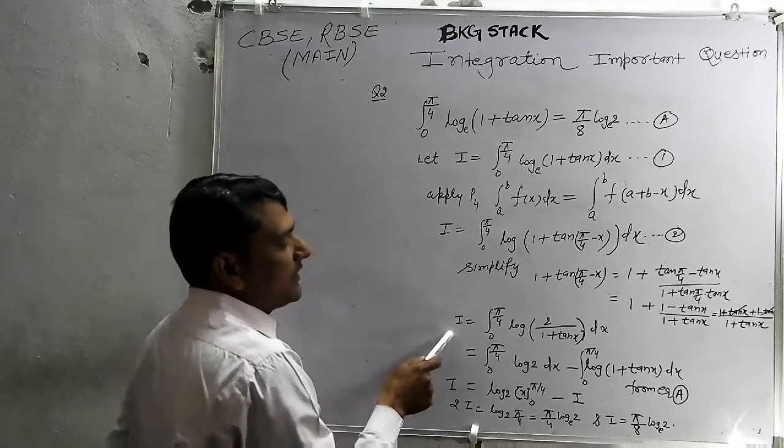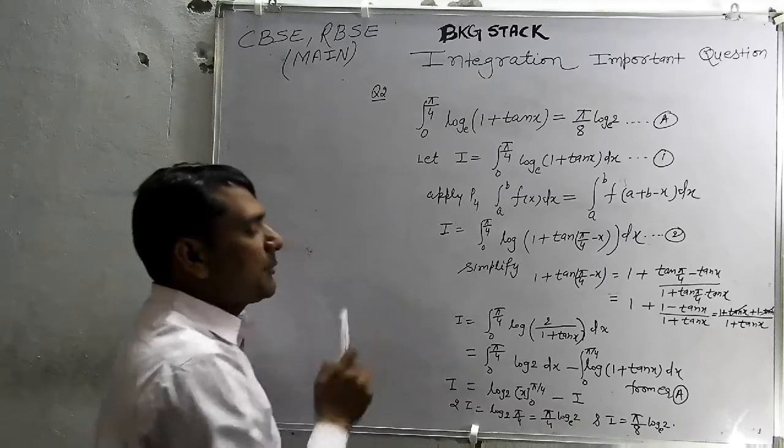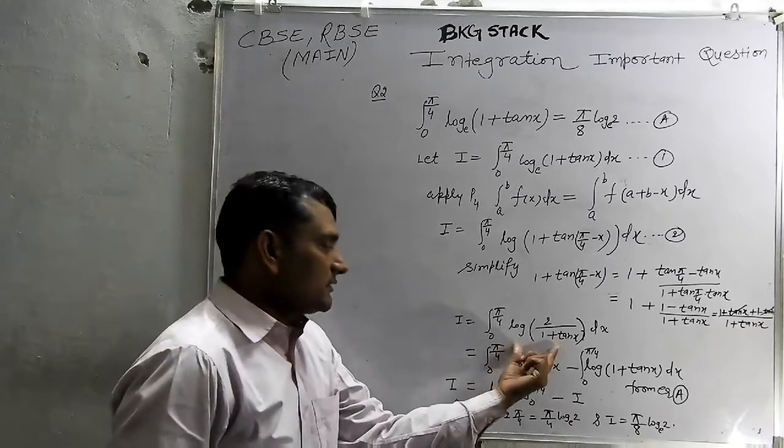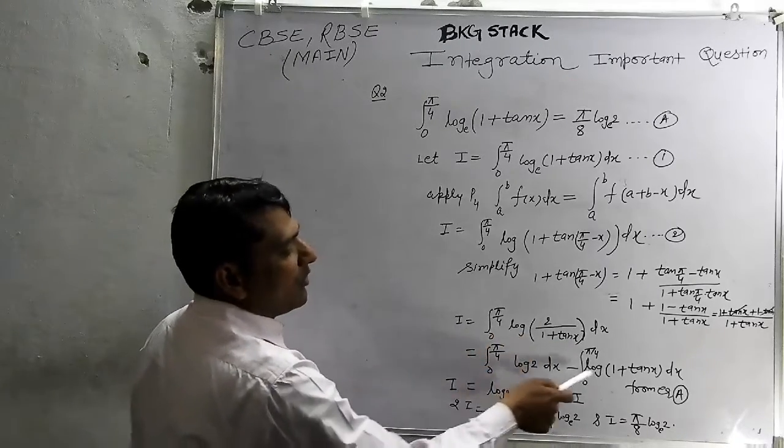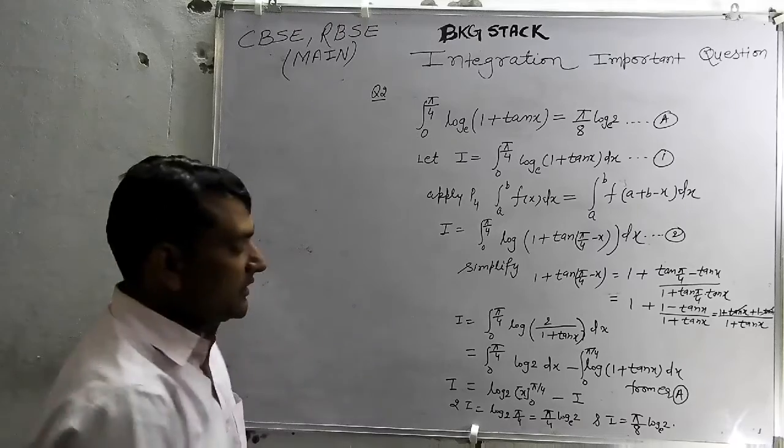Now, this is again written in form of like this. By the property of log, we can separate it in the form of minus log 2 minus log of 1 plus 10x dx.